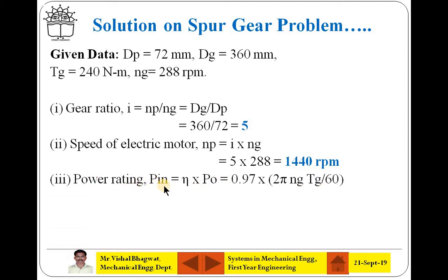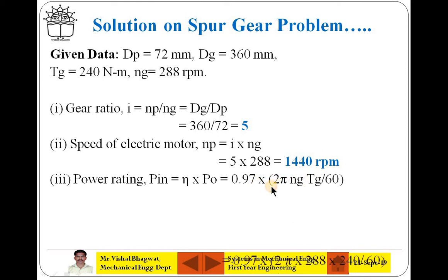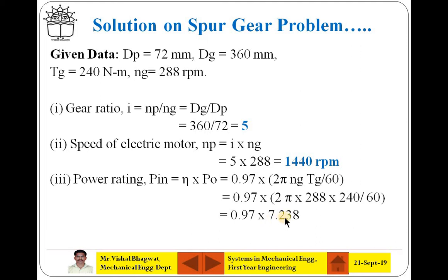Next is the power rating. Using the efficiency formula — output power divided by input power — input power (the power rating of the electric motor) equals output power divided by efficiency. Efficiency is 0.97. Output power is calculated as 2πNT/60 (shaft power), which gives 7.238 kW. Dividing by efficiency: input power or power rating of the electric motor is 7.238 divided by 0.97, which equals 7.021 kW.